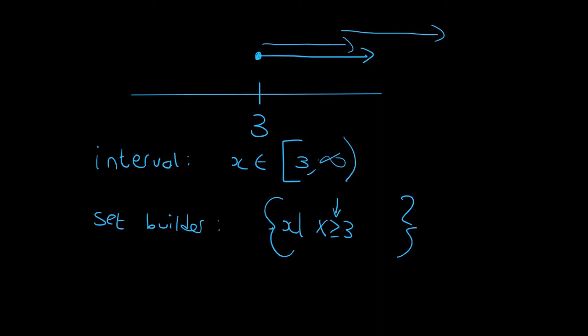So look at this. The crocodile mouth is eating the x. That means x is bigger than 3. And x is all of these numbers on the line. And then we're busy with real numbers like that.